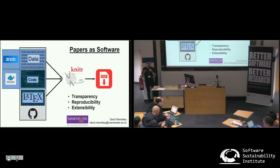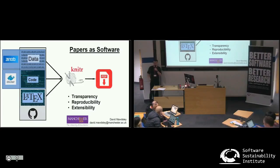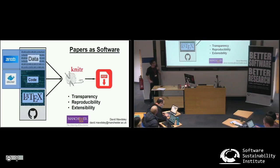And of course the whole thing can live in a Git repository on GitHub, so people can see it, modify it, and see what you've done. The whole process is completely transparent and people can take it and modify it if they want. So that's the advantage of transparency, reproducibility, and extensibility.